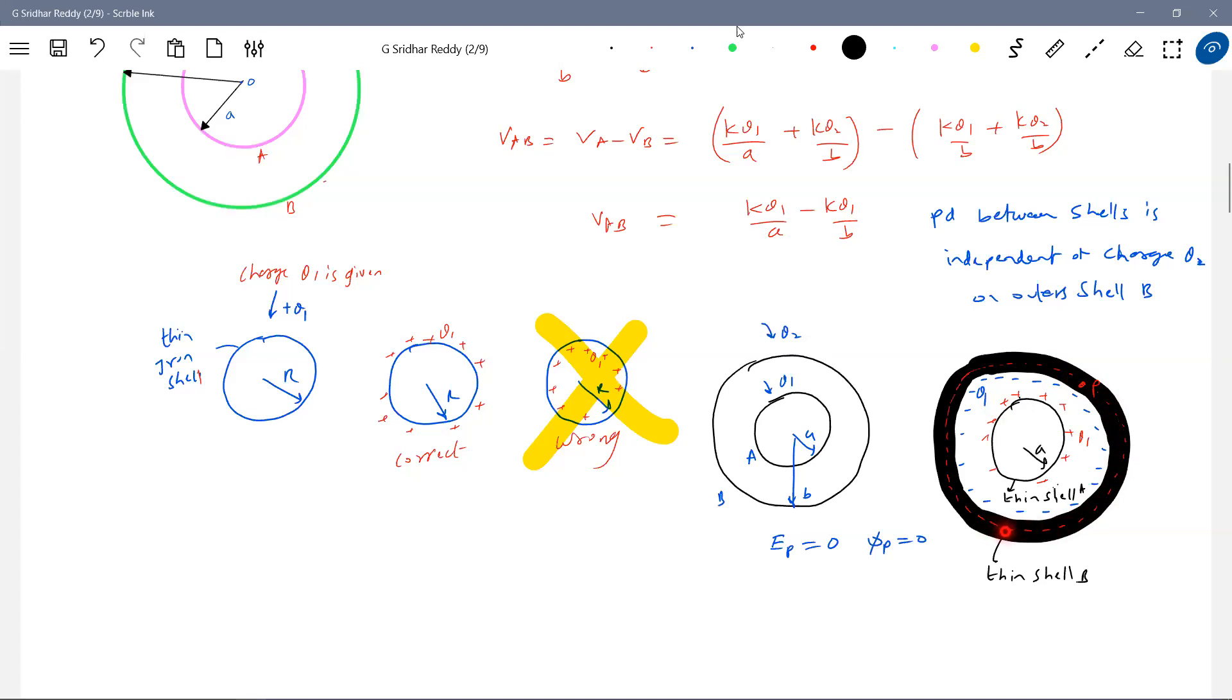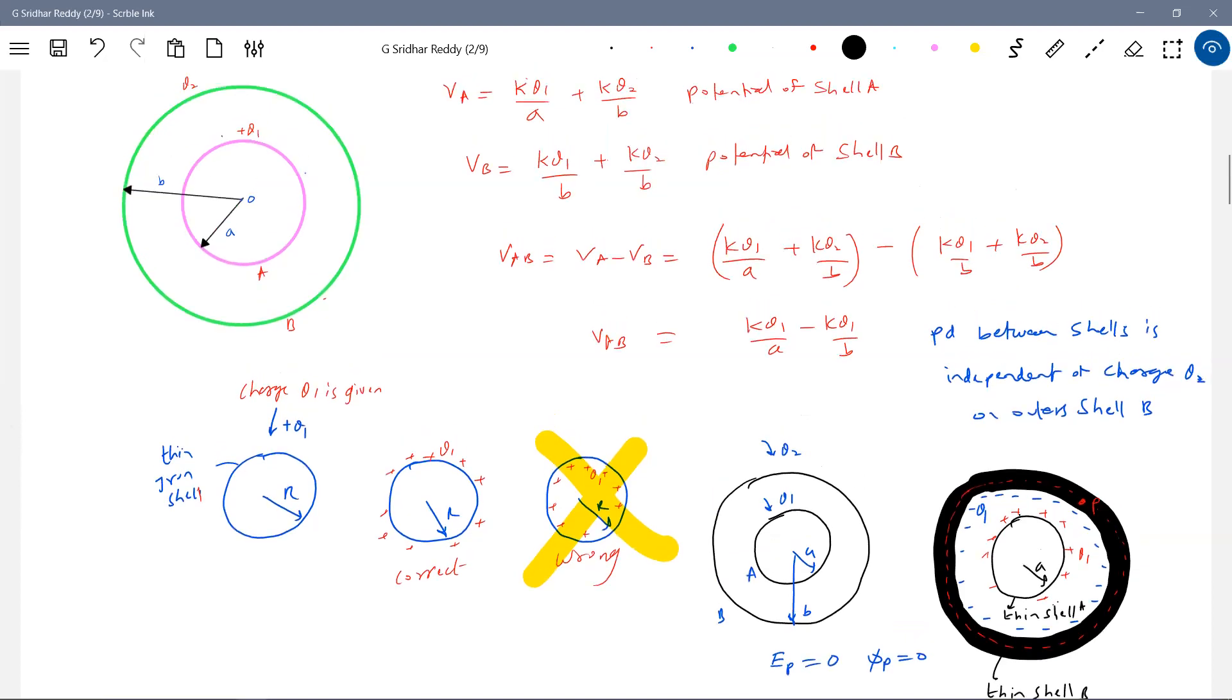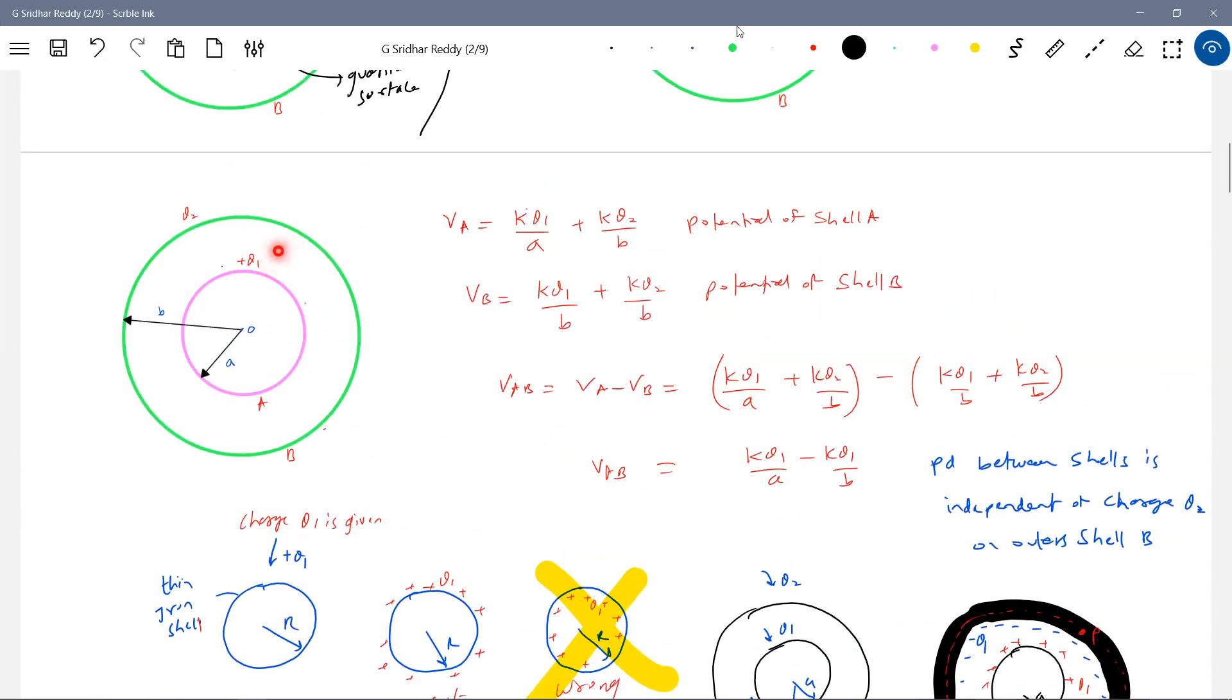There's shell A and shell B. Agreed all of you. So why it should be minus Q1 on inner surface of shell B? There's a reason. I know you can ask question. You didn't consider such minus Q1 and you solved it. Whether you consider the induced charge on inner shell or not, the final answer will be same. Check it.